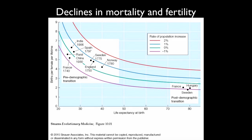In the pre-transition panel, you see India around 1900, Sweden around 1775, England around 1750, and France around 1740. In the post-transition panel, you see Hungary, Sweden, and France after completing the transition.